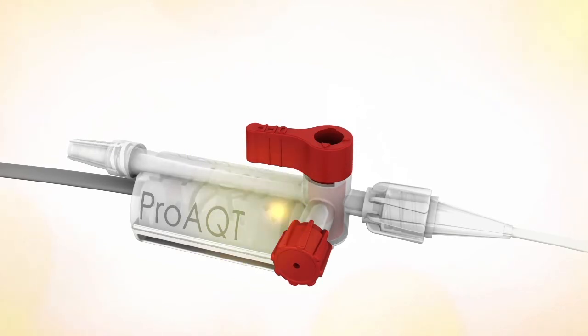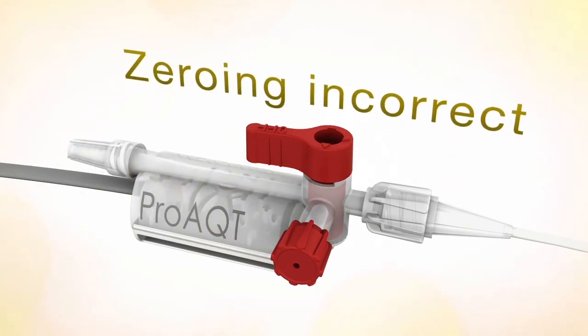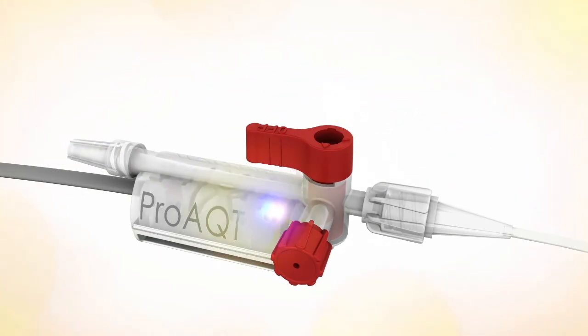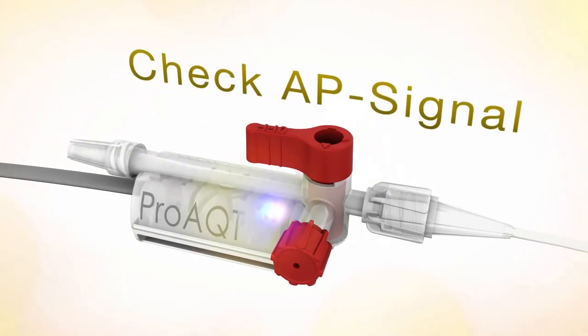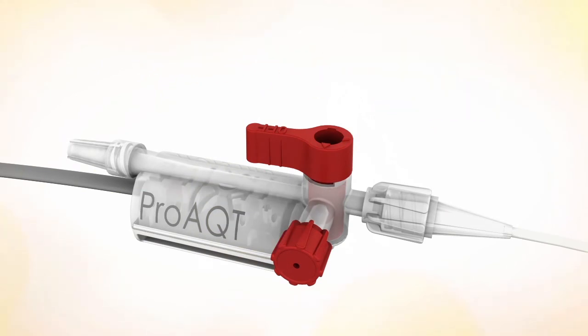Three short orange flashes indicate that zeroing was incorrect. Continuous flashing of blue and orange light at the same time means the AP signal needs to be checked. Three repeating short orange flashes indicate sensor failure. Thank you.